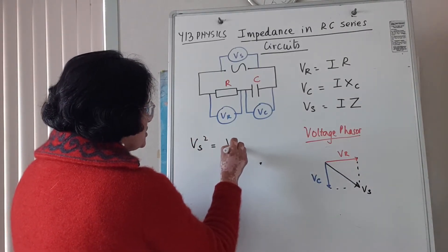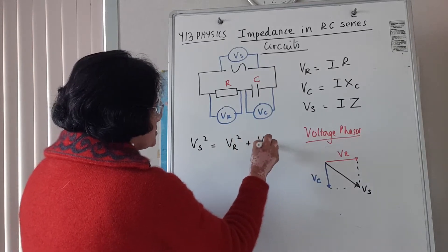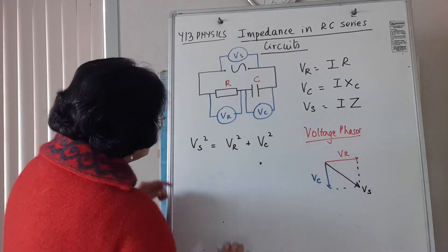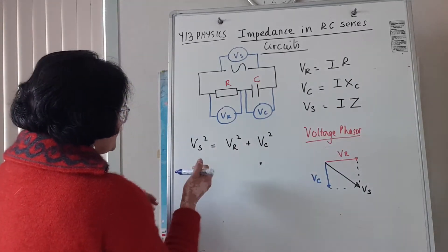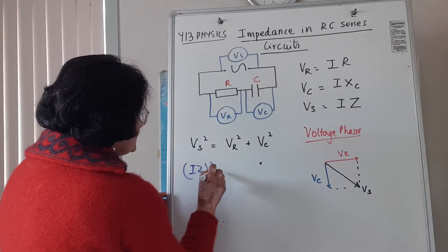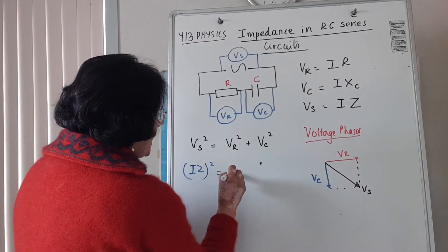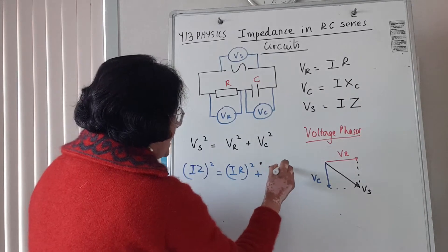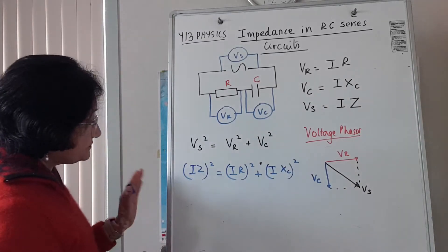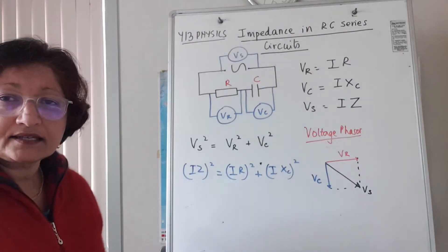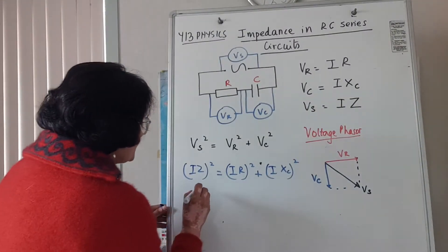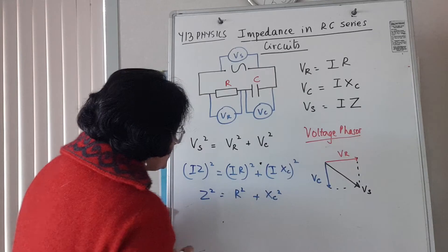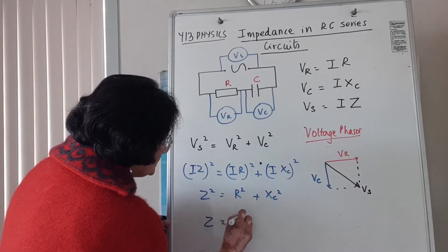Using Pythagoras, we get voltage across the supply squared equals voltage across the resistor squared plus voltage across the capacitor squared. In this equation, if I substitute VS with IZ, VR with IR, and VC with IXC, I get (IZ)² = (IR)² + (IXC)². Since I is a common factor, Z² = R² + XC², or impedance Z equals the square root of R² plus XC².